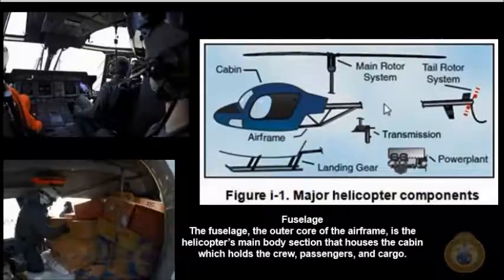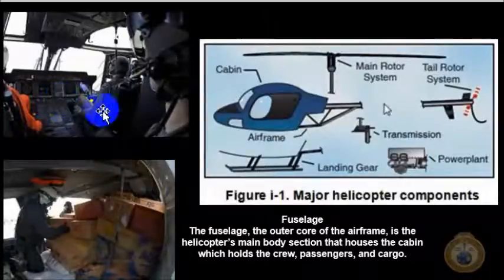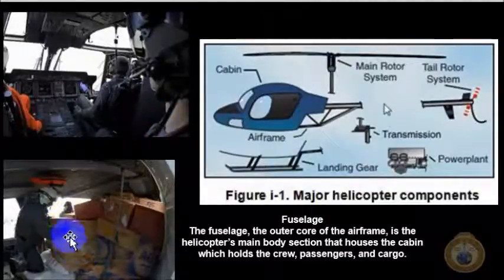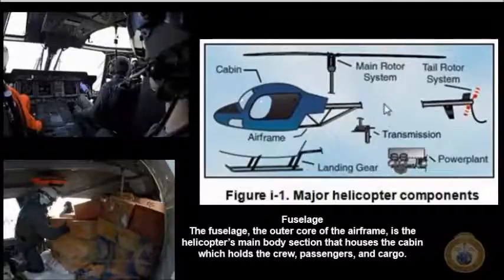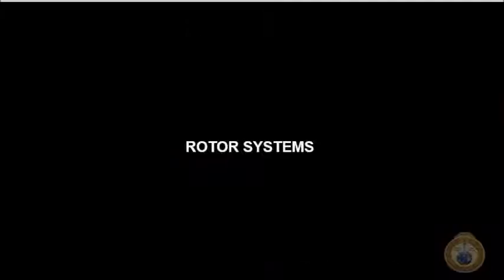Here we have a slide — you can see the cockpit, the pilot, and the co-pilot up front. And here we have an aircrew member that's probably just making sure that the cargo is secure. So that is the fuselage — it's the outer core, pretty much the airframe, and it's the helicopter's main body.